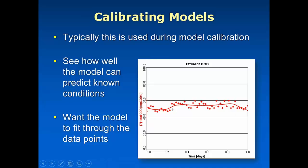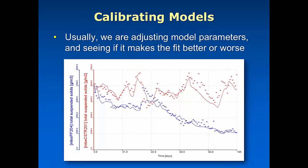One thing to keep in mind is the frequency of the data points in your output versus the data points driving your input. Typically when doing a dynamic calibration you're driving changes in the influent — flow, pH, temperature, and all the different concentrations. You may not have data at the exact same frequency in both cases. If your input data is at a much less frequent interval, it can be tough to match your output when you have a lot more data points.